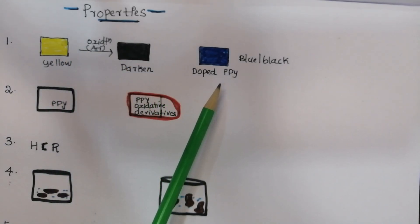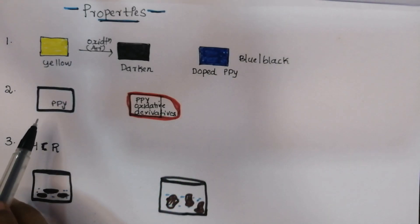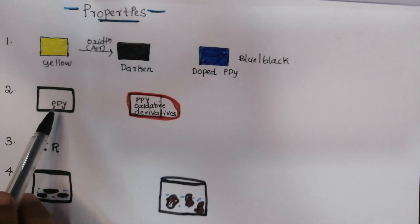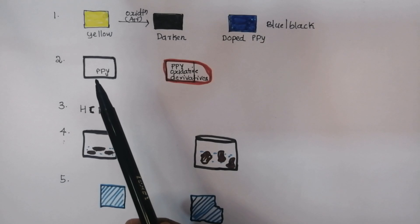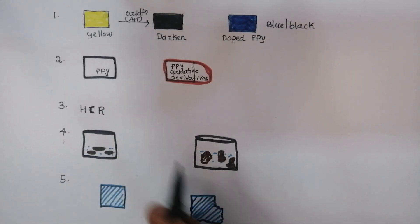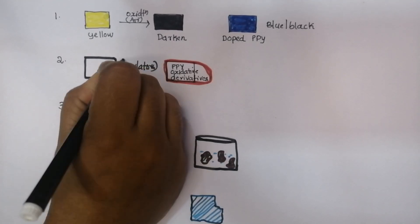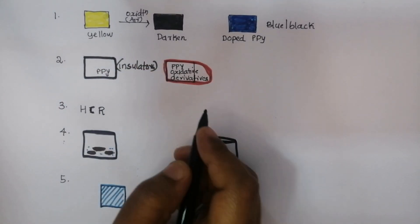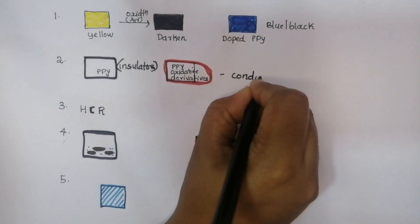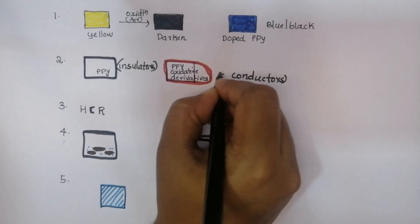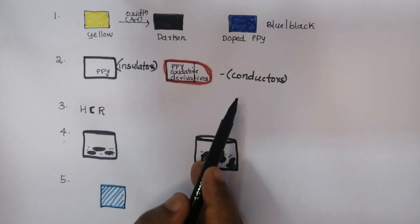The second property: normal polypyrrole films have insulating character — they are insulators. However, oxidative derivatives of PPy are good electric conductors. So PPy itself is an insulator, but its oxidative derivatives are conductors.